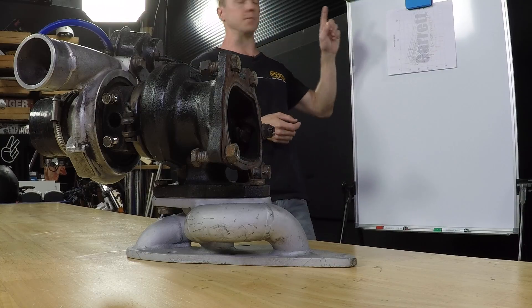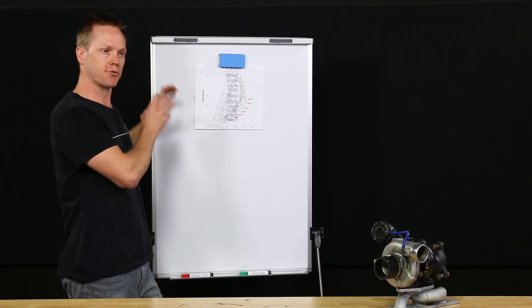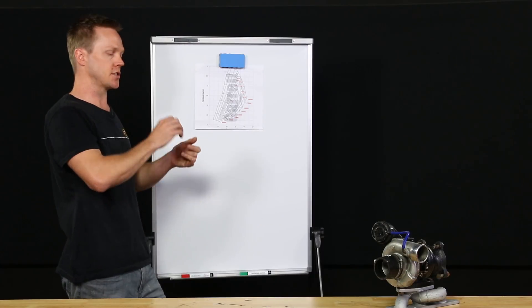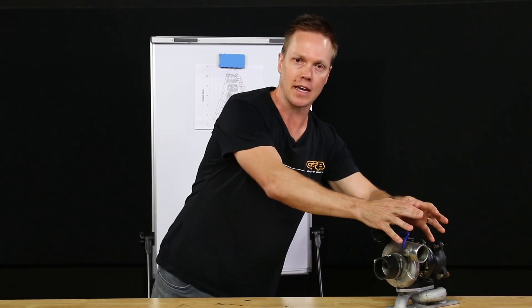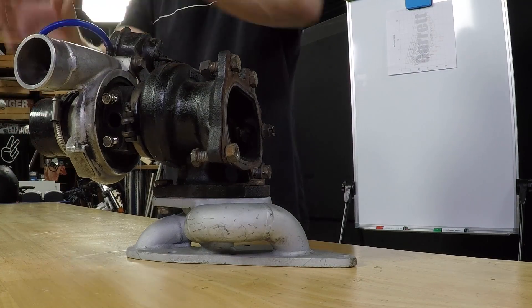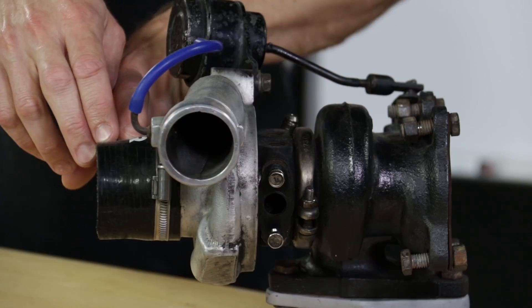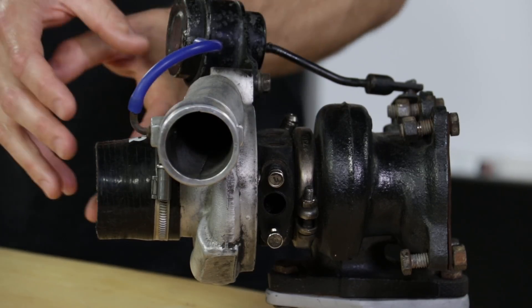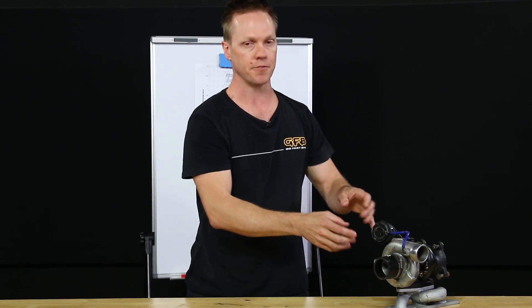So the first one we're going to look at is the pressure ratio. Now this is not strictly boost pressure on its own. It's actually the ratio of the pressure of the air coming out of the outlet versus the pressure of the air going into the inlet. Now that's important because the inlet pressure is not always atmospheric. If you have a pressure drop, then the pressure ratio is going to be different.